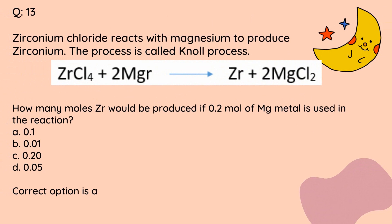Question number 13. Zirconium chloride reacts with magnesium to produce zirconium. The process is called the Kroll process. How many moles of zirconium would be produced if 0.2 moles of magnesium metal is used in the reaction? A. 0.1. B. 0.01. C. 0.20. D. 0.05. Correct option is A.